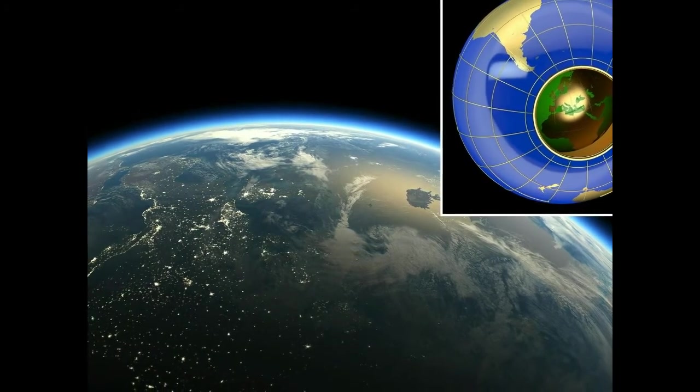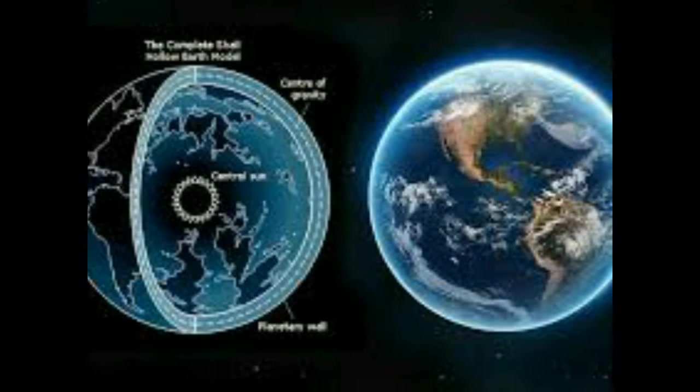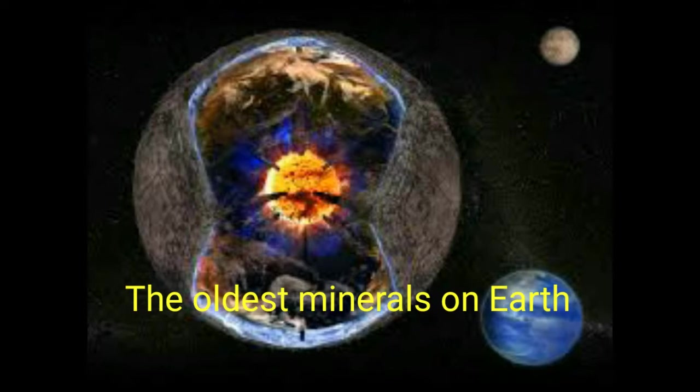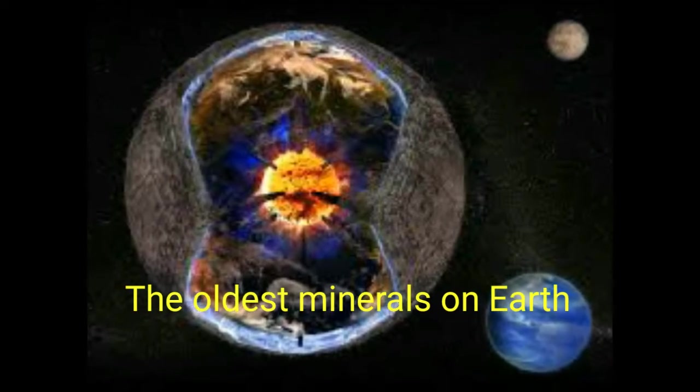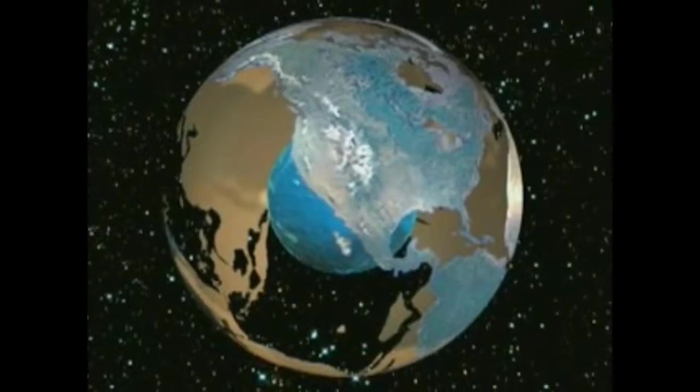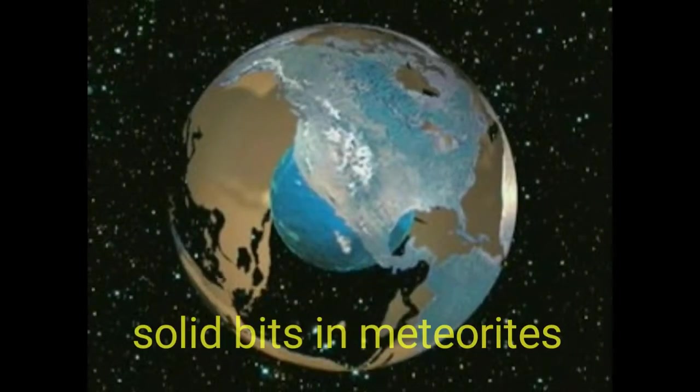Modern estimates are based on radioactive dating methods. The oldest minerals on Earth, small crystals of zircon from the Jack Hills of Western Australia, are at least 4.4 billion years old. Calcium-aluminum-rich inclusions, the oldest known solid bits in meteorites, provide additional evidence.